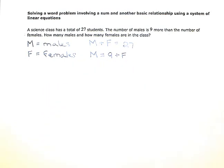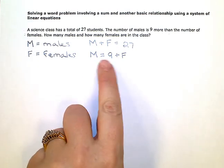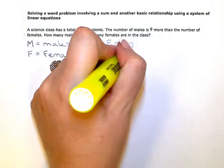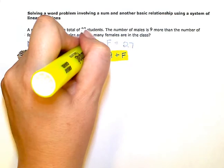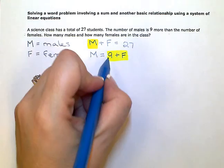So there's my two equations and now I'm going to solve this system using substitution. This bottom equation tells me that wherever I have an M, I can replace it with the expression nine plus F. So up here in the top equation, I'm going to replace that M with the expression nine plus F.